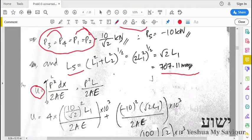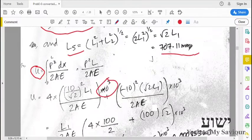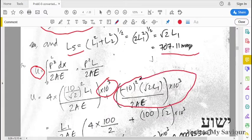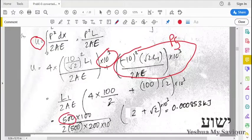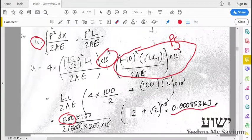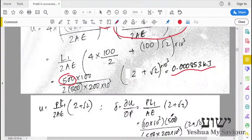Next, I have to find the total strain energy. Every member has an axial load. For axial loading, the equation is integral 0 to L of P² dx by 2AE. Here we don't have any variation in length, so this equation becomes P²L/2AE. Four members have equivalent length, so 4 times (10/√2)² times L by 2AE times 10³ to convert kilonewton to newton. For P5, the same follows. We get 0.000853 joules, that is 0.853 millijoules.